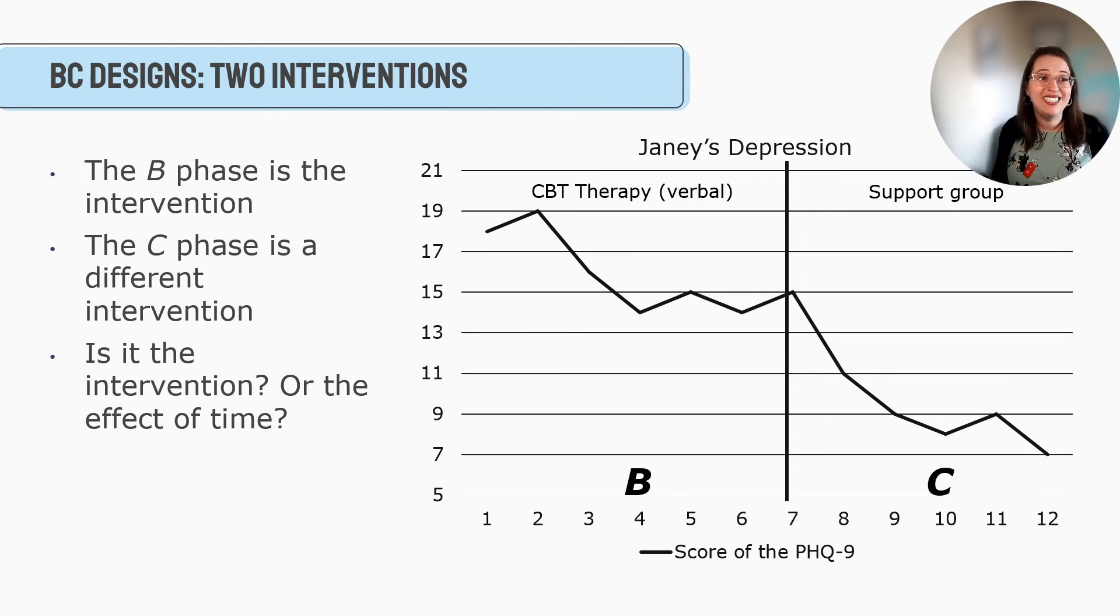We also have the BC designs, which are where you jump right in, but maybe use two different interventions. So in this case, maybe Janie comes in and on day one, we automatically start cognitive behavioral therapy. She really is struggling. She needs that intervention. So we would do B for, let's say seven weeks. Then we're like, you know, she's not really improving as much as we like. She doesn't feel like she's getting what she needs. Let's try a different intervention. Let's put her in a support group and let's see if that makes a difference. And then we can track her score as well. And so you can definitely look at two different interventions. Again, you still run the risk of, is it the intervention or is it the effect of time? It can be really challenging and it's not always clear.